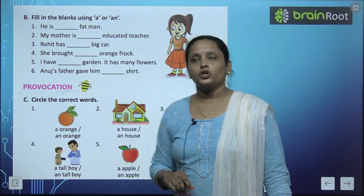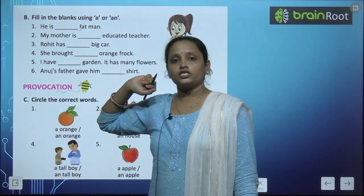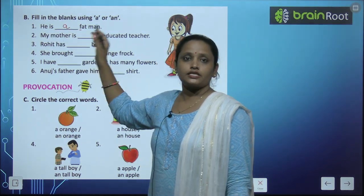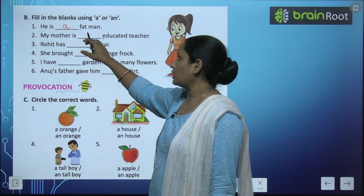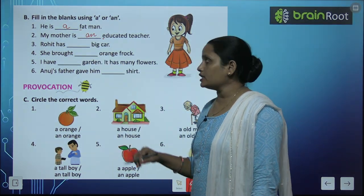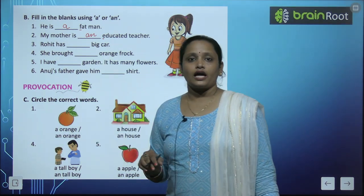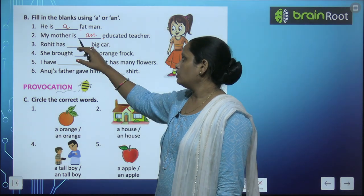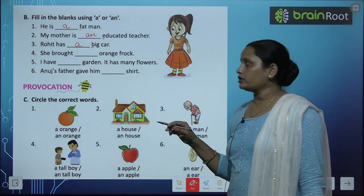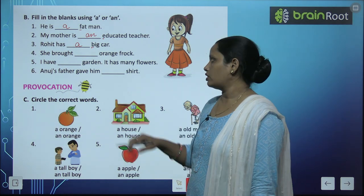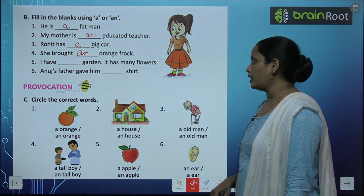Now fill in the blanks using A or An. पहले blank के बाद है F, which is a consonant, तो यहाँ पे आएगा A. So: He is a Fat Man. अगले blank के बाद है E — E एक vowel है, तो: My Mother is an Educated Teacher. Rohit has a bikhkar — bikhkar which is a consonant. She bought an Orange Frog — Orange का O एक vowel है, तो An Orange Frog.